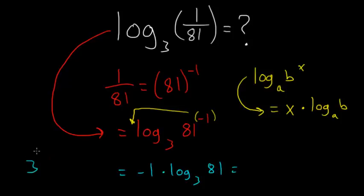We know that 3 raised to the 4th power is the same thing as 81. So now our problem is equal to minus 1 times 4, or in other words negative 4. So negative 4 is our final answer.